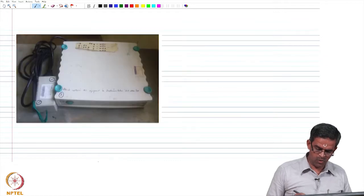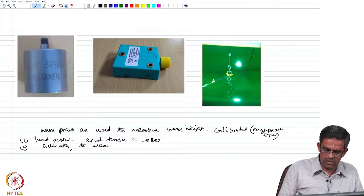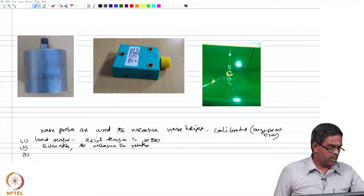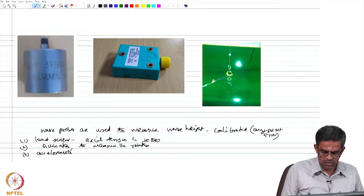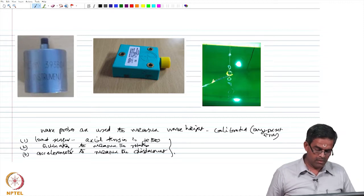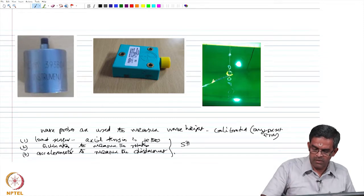Since it is going to move in all six degrees of freedom, and roll, pitch, and yaw being rotations, I need an inclinometer to measure the rotations. The third one could be that I also need accelerometers to measure the displacements. That is the wave measurements, or the measurements which we need to measure during the health monitoring scheme.